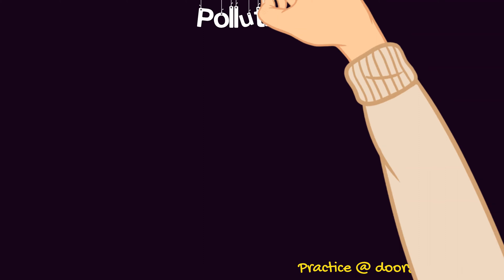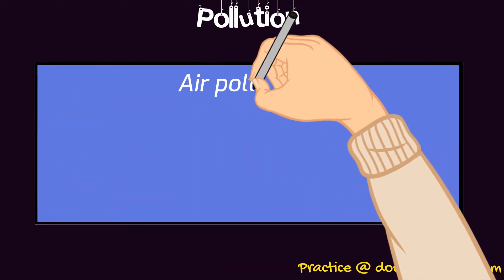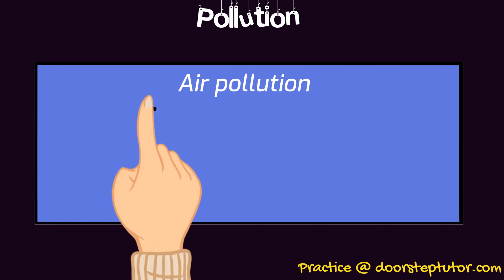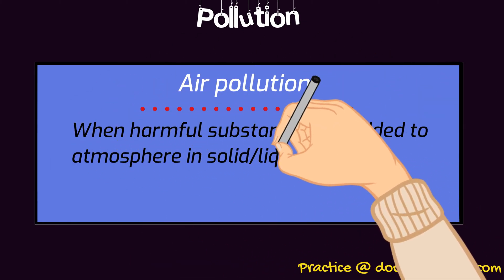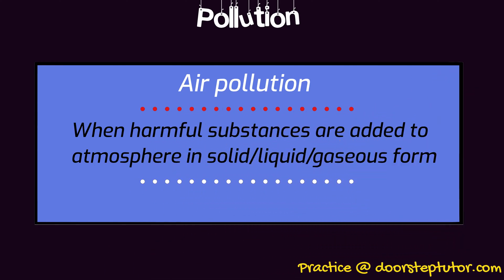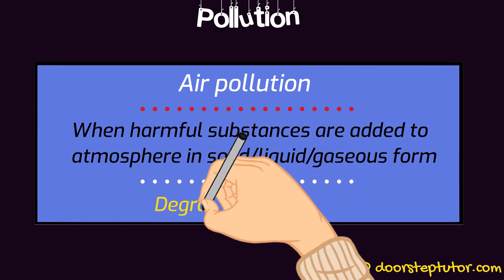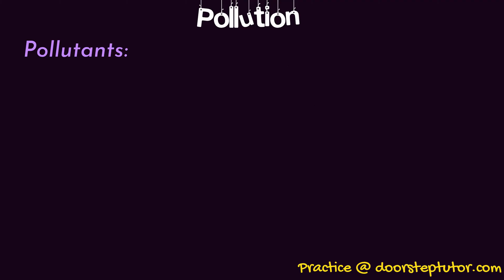So what is pollution? Pollution is when harmful substances are added to the air, and it could be in the form of solid, liquid, or gas. Coming to air pollution, when such harmful substances are added to the air, it degrades the air quality. What are some kinds of pollutants of air pollution?